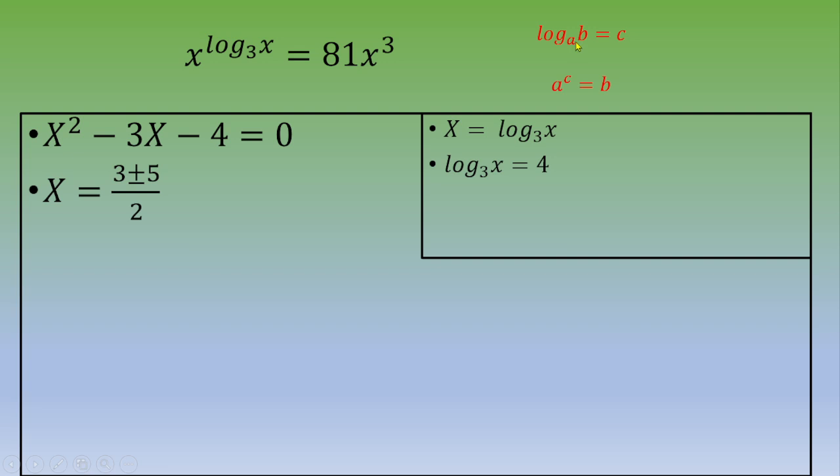Log base A of B equals C means A to the power of C equals B. So now we can write X equals 3 to the power of 4, and this is 81.